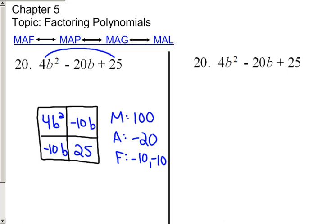Don't forget to give them the variable. It's the negative 10B plus the negative 10B that give you the negative 20B in the middle. Now, once you have all four boxes filled in, you will factor out the greatest common factor of each row and column.